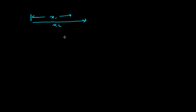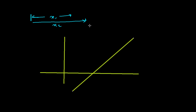Let's take an example. Suppose we have a line L making an angle of 45 degrees with the x-axis. Then the slope of this line m will simply be tan(45°), and tan(45°) equals 1. So the slope of this line is 1.